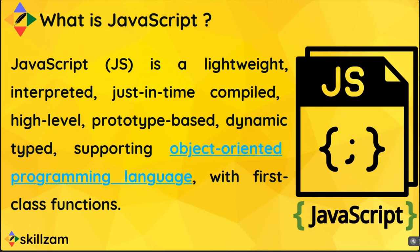JavaScript supports object-oriented programming (OOP), where data is encapsulated within objects. OOP involves concepts like encapsulation, inheritance, and polymorphism. JavaScript also has first-class functions — when functions in that language are treated like any other variable. We will understand this better when we see concepts related to arrow functions and other things.